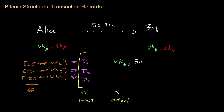In order for Alice to get back change — because she has 65 Bitcoins coming in and is only giving 50 to Bob — she may decide to specify 14 of those Bitcoins to be returned back to her in the form of change. So 14 of those Bitcoins are reassigned back to Alice's public key.